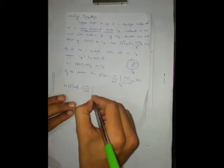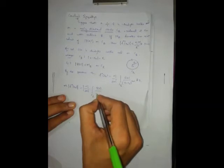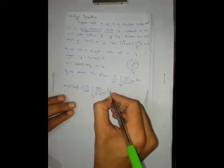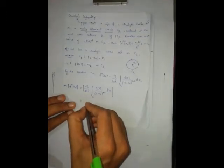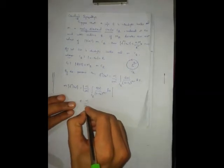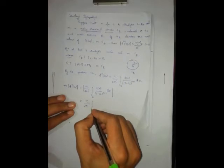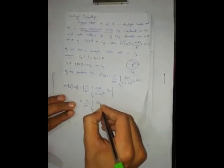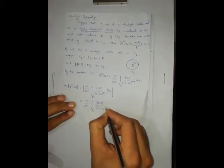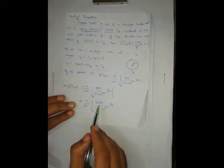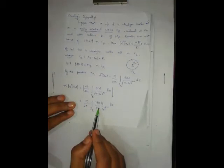Now taking the modulus of both sides: the modulus of the nth derivative of f at z0 equals the modulus of n factorial over 2πi times the integral over C_R of f(z) over (z minus z0)^(n+1) dz. This is less than or equal to n factorial over 2π times the integral over C_R of the modulus of f(z) divided by the modulus of (z minus z0)^(n+1) dz. Since the modulus of f(z) on C_R is less than or equal to M_R, and the modulus of (z minus z0) equals R on C_R.